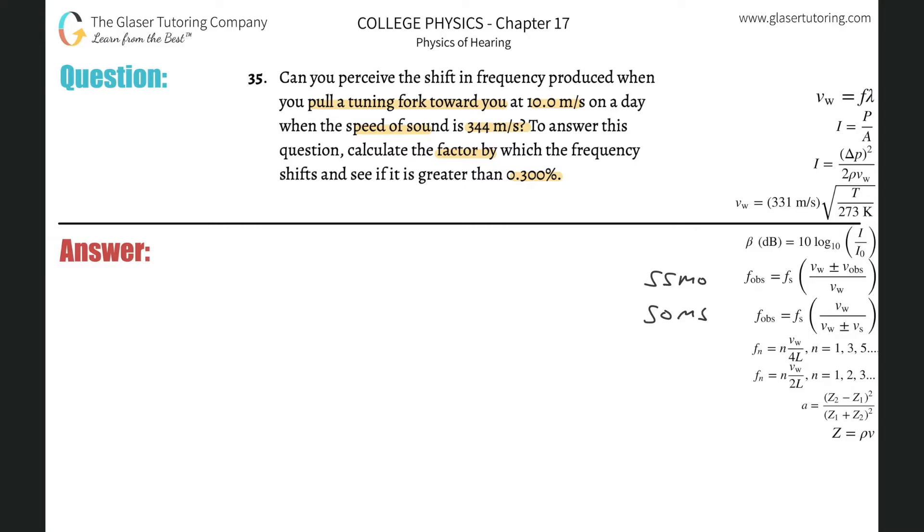In this problem, the tuning fork is the source producing a certain frequency and it's moving toward you, the observer. So we're dealing with the SOAMS formula. How do we remember which one? Remember, SOAMS has the signs in the bomb bombs - one has the sign on the bottom, the other has a sign on the top. That's how we memorize it.